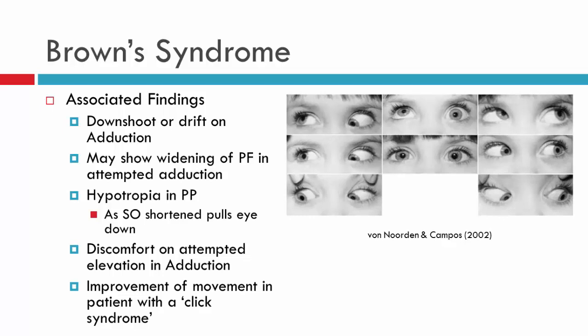Another finding is a widening of the palpebral fissure on adduction — visible here as the patient crosses into dextroversion, though it's not seen in all patients. Some patients may also have a hypotropia in primary position, usually associated with a short superior oblique pulling the eye down. Patients may also feel discomfort on attempted elevation in adduction, likely associated with nodules or inflammation of the superior oblique. The click syndrome may also be observed, where a nodule passes through the trochlea allowing the eye to elevate after repeated attempts.